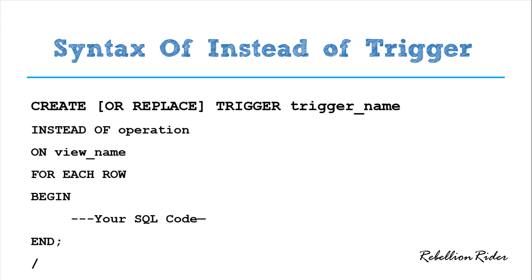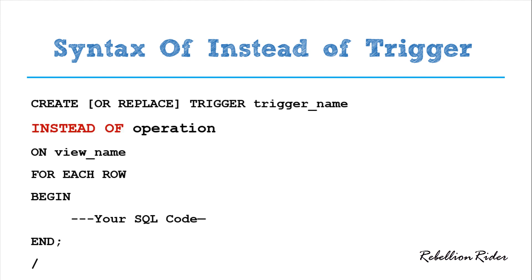The first line is similar to every other trigger we have seen so far. It starts with the keyword CREATE and an optional OR REPLACE clause, using which we can alter the definition of an already created trigger, followed by the keyword TRIGGER, which specifies to the compiler what object we are going to create, and then we have the name of the trigger.